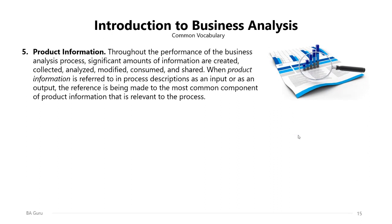Another term is product information. Throughout the performance of the business analysis process, significant amounts of information are being created, collected, analyzed, modified, consumed, and shared. When product information is referred to in process descriptions as an input or output, the reference is made to the most common component of product information relevant to the process itself. All information created throughout the business analysis activities and efforts falls under the product information category.